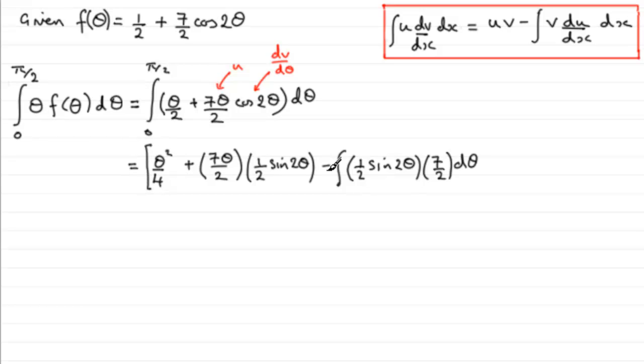And all of this is within the limits 0 to pi upon 2. So I'll just pop that in square brackets there from 0 to pi upon 2. OK, so we'll just clean this up a little. For the first term, let's just leave that as theta squared over 4 for the moment. For this term here, we can do 7 theta sine 2 theta all over 2 times 2, which is 4. So we've got 7 theta over 4 multiplied by sine of 2 theta.